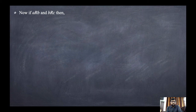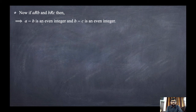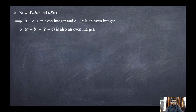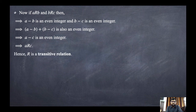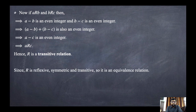For transitivity, we need: if a is related to b and b is related to c, then a must be related to c. If a is related to b, then a minus b is an even integer. If b is related to c, then b minus c is an even integer. Adding both: (a minus b) plus (b minus c) equals a minus c, which is also an even integer since the sum of two even integers is even. Thus a is related to c, so R is transitive. Since R is reflexive, symmetric, and transitive, it is an equivalence relation.